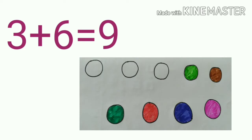Here you can see, 6 circles are shaded and 3 circles are unshaded. So how will you add these two numbers? That is, 3 plus 6 is equal to 9.